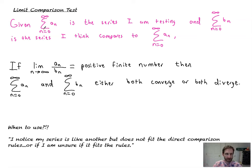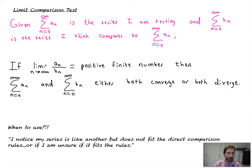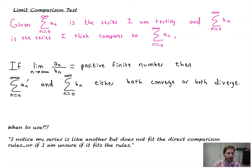So the limit comparison test says this: given that you have a series from n equals zero to infinity of some sequence — that's the series you're testing — and we know that there's another series that compares nicely to it, then if the limit as n goes to infinity of the ratio of these two functions, a sub n and b sub n, is a positive finite number, then we know that they either both converge or diverge.